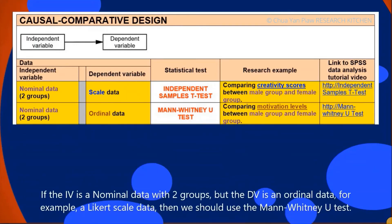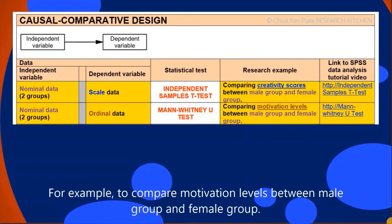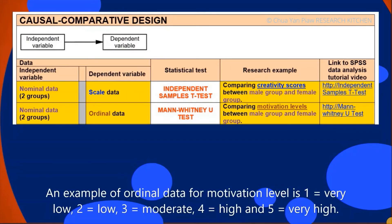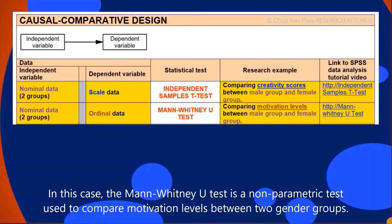If the IV is nominal data with two groups but the DV is ordinal data — for example, a Likert scale — then we should use the Mann-Whitney U test. For example, to compare motivation level between male and female groups, where motivation level is ordinal data with 1 equal to very low, 2 equal to low, 3 equal to moderate, 4 equal to high, and 5 equal to very high, the Mann-Whitney U test is a non-parametric test used to compare motivation level between the two gender groups.